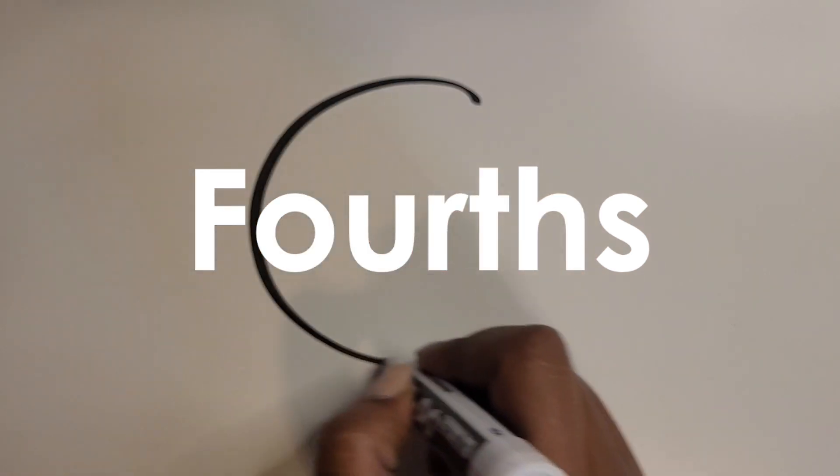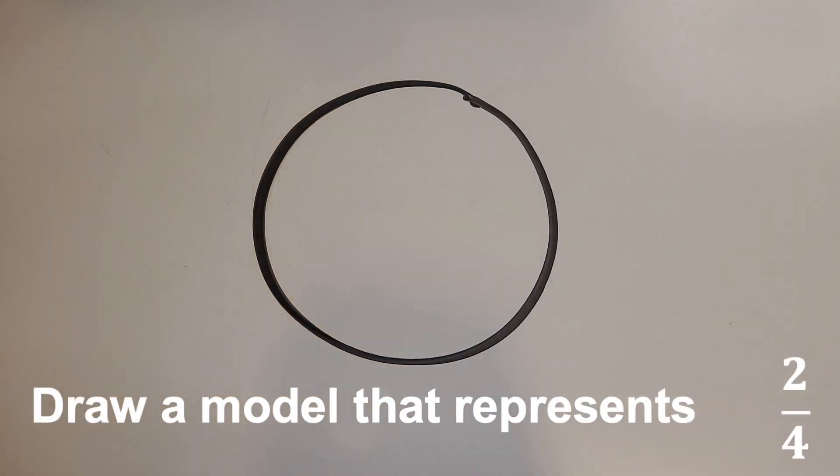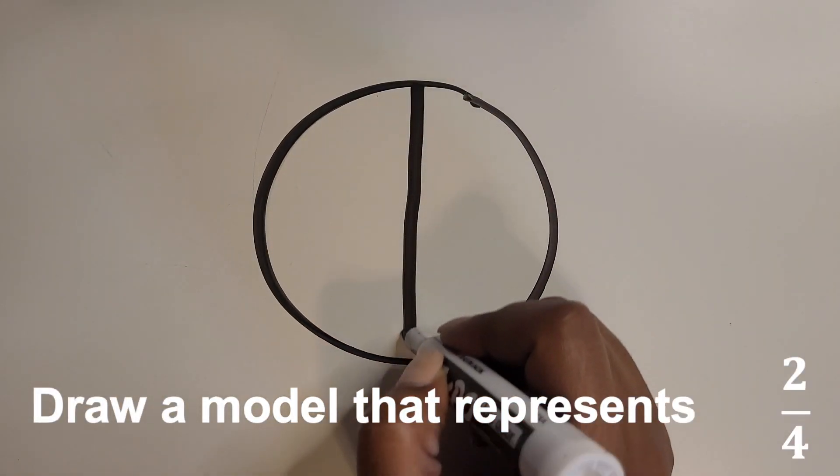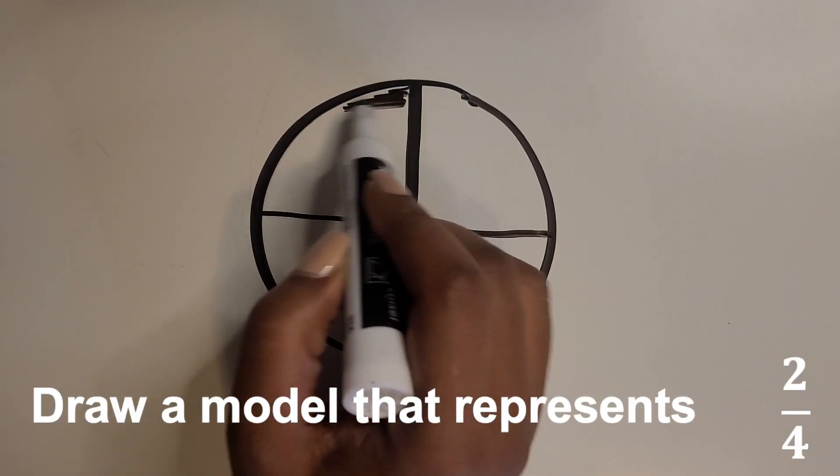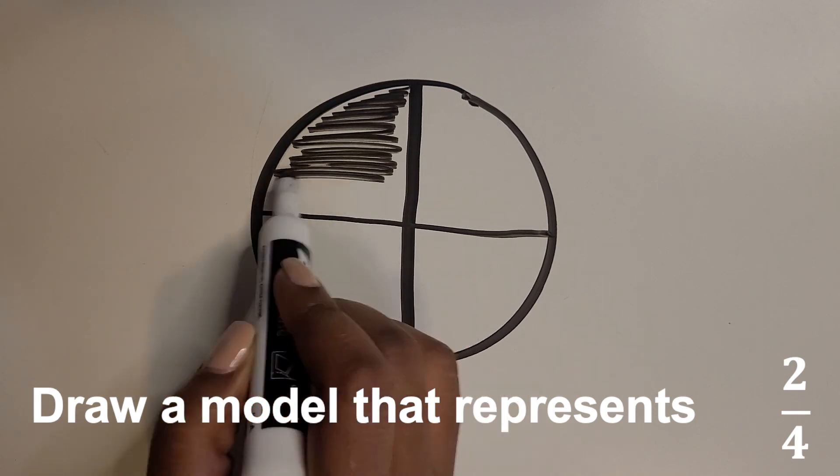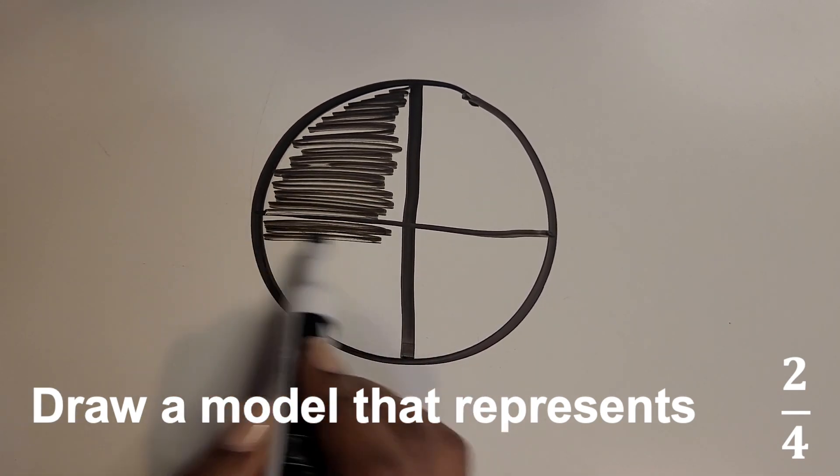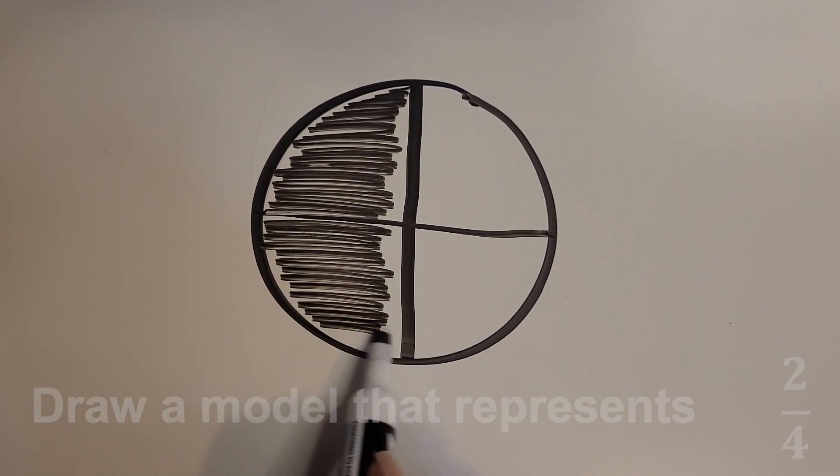Now let's create fourths to represent two fourths. We're gonna draw a line vertically down the middle and across going horizontally to create fourths. Then shade in two of those fourths to create two fourths. It could be any of the four in the circle you can shade in; it doesn't have to be right next to each other.